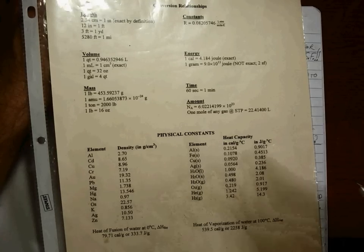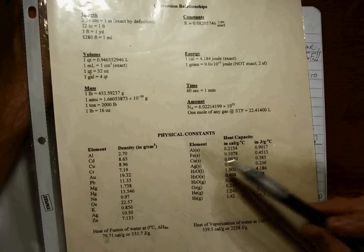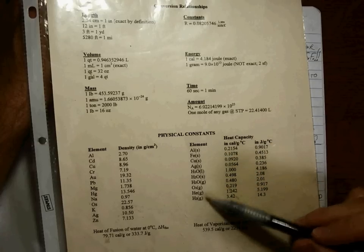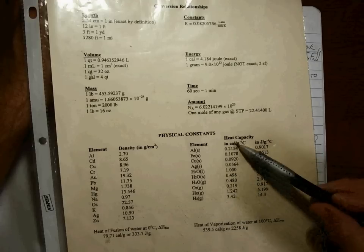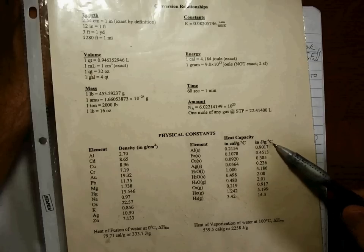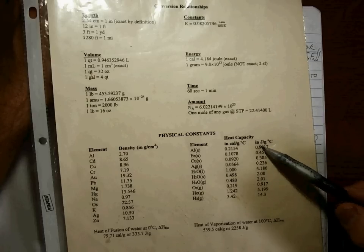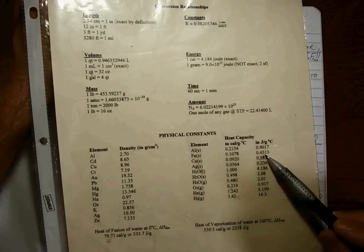If you look at your conversion sheet that's in the front of your book, and this is the conversion sheet that you're going to see on your tests, notice that heat capacities for different elements in different states of matter are found in both calories per gram per degree C and joules per gram per degree C.